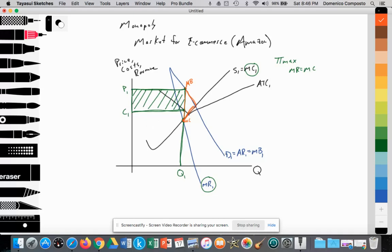We're measuring quantity on the x-axis and price, costs, and revenue on the y-axis. We have an upward sloping supply curve labeled S1 according to law of supply, which is equal to our marginal cost curve MC1, and it intersects with the average total cost curve at its lowest point.